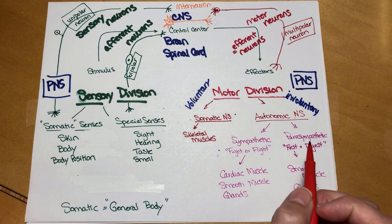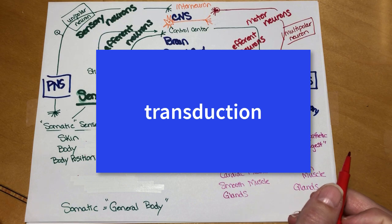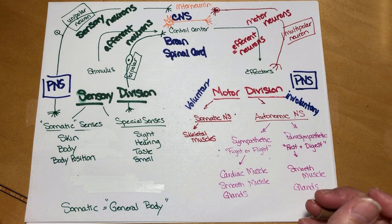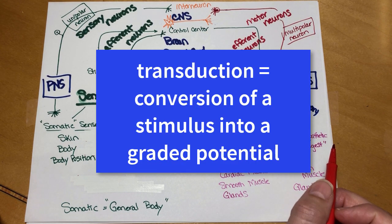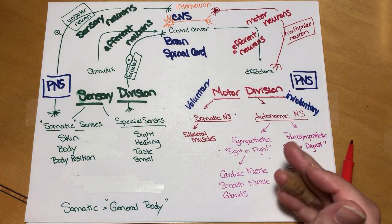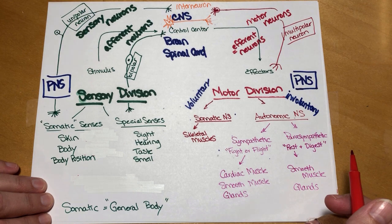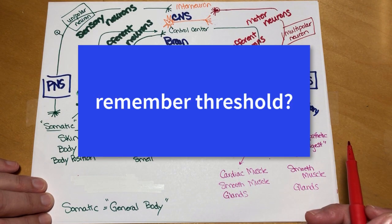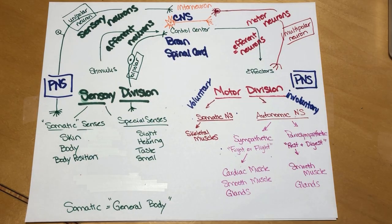In order for any action potential to be sent, the neuron must undergo transduction. Transduction is a fancy word for something we've already learned about — it is the conversion of a stimulus into a graded potential. Once we have graded potentials, we can have inhibitory ones or excitatory ones. If there are enough excitatory potentials generated by transduction, an action potential will be sent. Without transduction, none of this will happen.